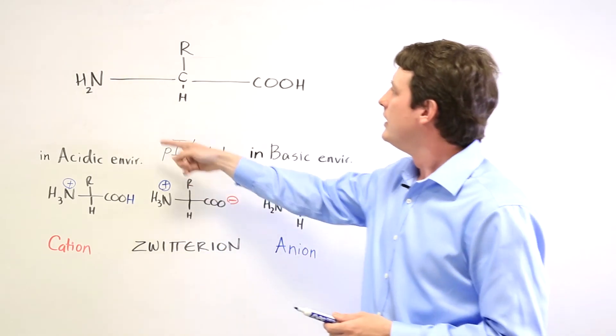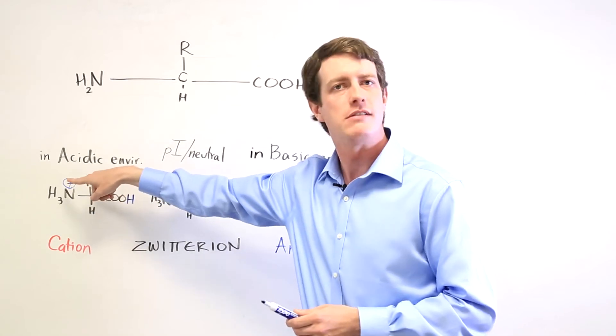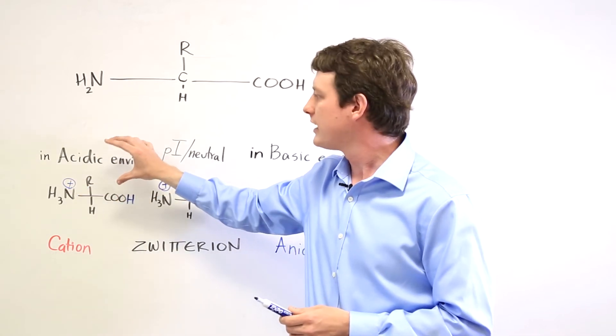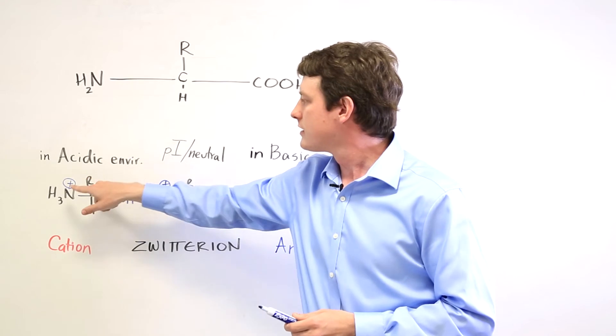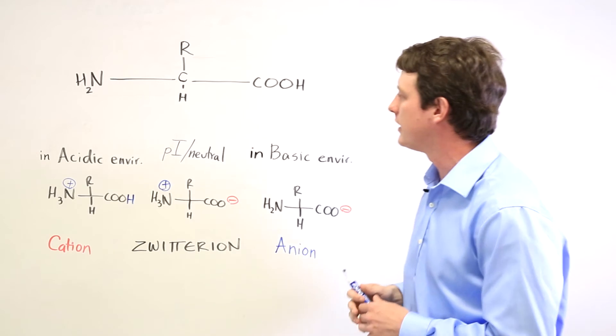In an acidic environment the amino group will pick up an extra proton and become positively charged. So in a more acidic environment amino acids are diprotic. They're cations with a hydrogen here and a hydrogen there.